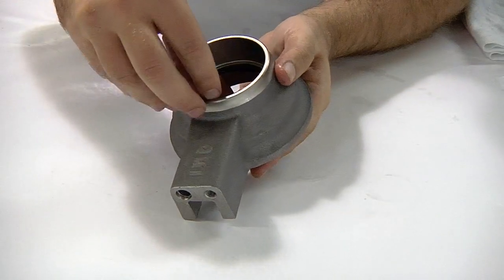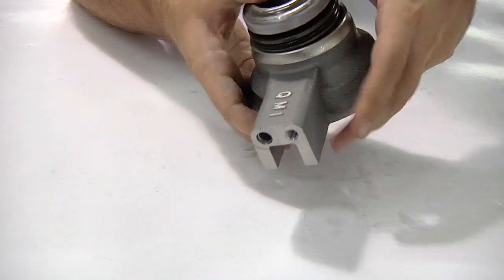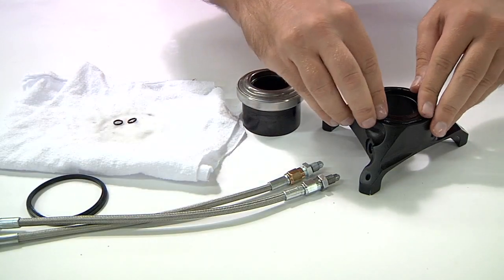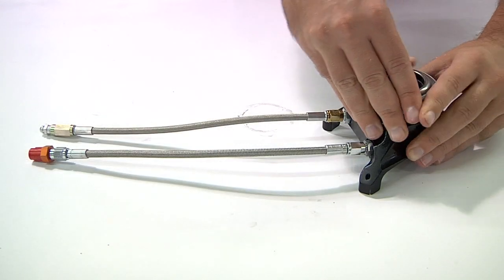No matter which clutch and hydraulic release bearing combination you are using, regular maintenance and seal replacement will ensure consistent, firm shifts and a longer, trouble-free service life.